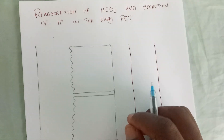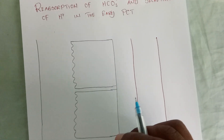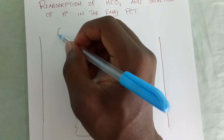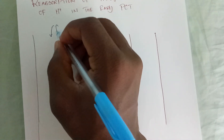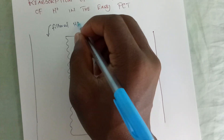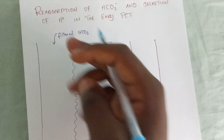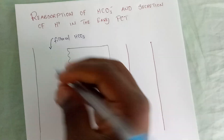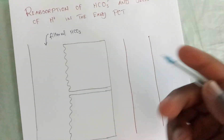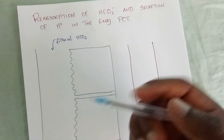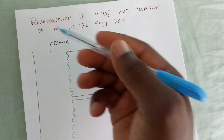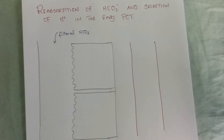The reabsorption of bicarbonate and secretion of hydrogen ions occurs in the early proximal convoluted tubule. This is the filtered bicarbonate that has been filtered, and we need to understand the reactions it will undergo in order to be reabsorbed, and also how hydrogen ions come about.